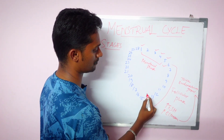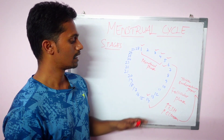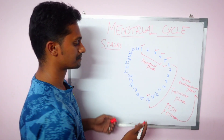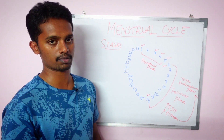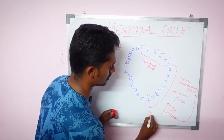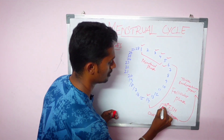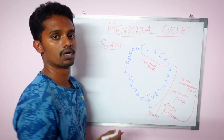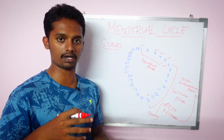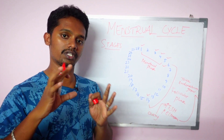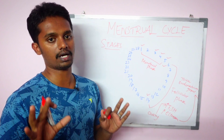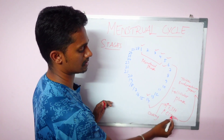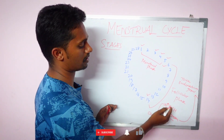Day 6 starts and ends on day 14. During this time, the follicle-stimulating hormone (FSH) acts on the ovary. The ovary develops a follicle. FSH stimulates the growth of the follicle in the ovary throughout days 6 to 14. When FSH levels are sufficient, the follicle is mature enough to proceed to the next phase.